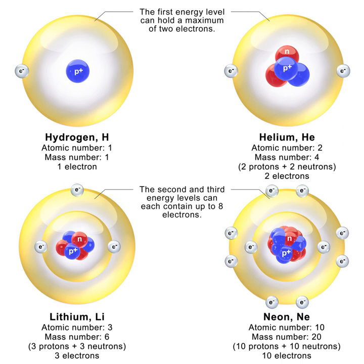The lowest value of n is 1; this gives a smallest possible orbital radius of 0.0529 nm, known as the Bohr radius. Once an electron is in this lowest orbit, it can get no closer to the proton. Starting from the angular momentum quantum rule, Bohr was able to calculate the energies of the allowed orbits of the hydrogen atom and other hydrogen-like atoms and ions. These orbits are associated with definite energies and are also called energy shells or energy levels. In these orbits, the electron's acceleration does not result in radiation and energy loss. The Bohr model of an atom was based upon Planck's quantum theory of radiation.